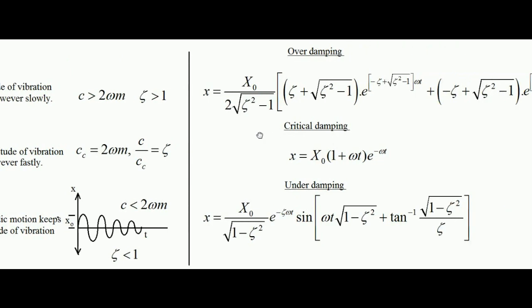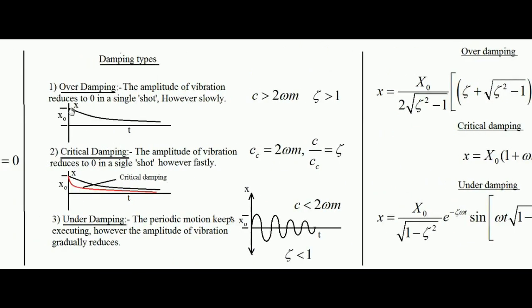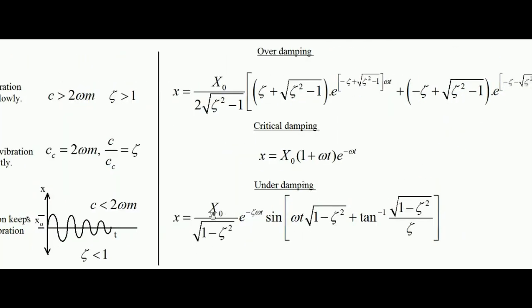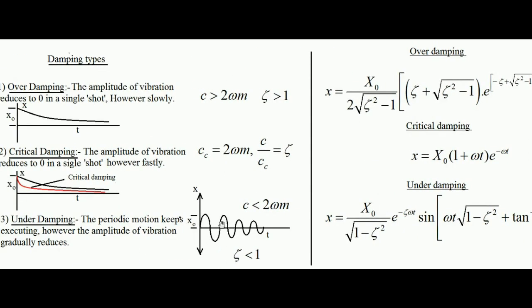For critical damping — the red line — the displacement as a function of time is: x = x₀ (1 + ωt) · e^(−ωt), where x₀ is the initial amplitude from where the mass starts moving toward the mean position. For under damping, the displacement is: x = (x₀ / √(1−ζ²)) · e^(−ζωt) · sin(ωt√(1−ζ²) + tan⁻¹(√(1−ζ²)/ζ)). The presence of the sine function indicates a sinusoidal wave.